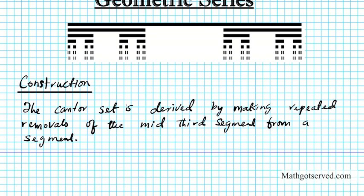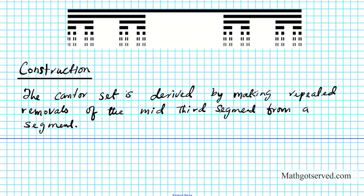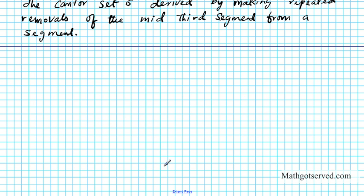The union of those points form the counter set. Let me give you a visual as to what we're talking about. We're going to draw a line segment and break it into thirds. I made this line segment 27 units long. The first nine units form the first third.